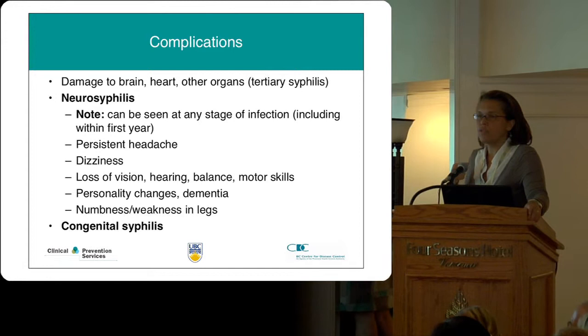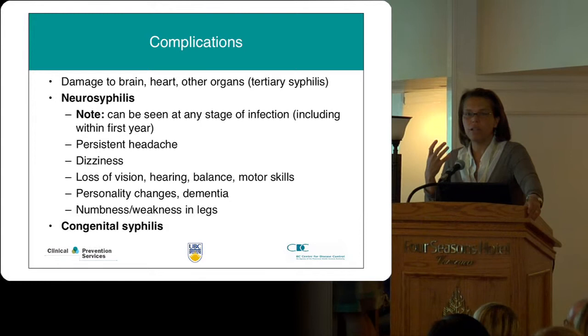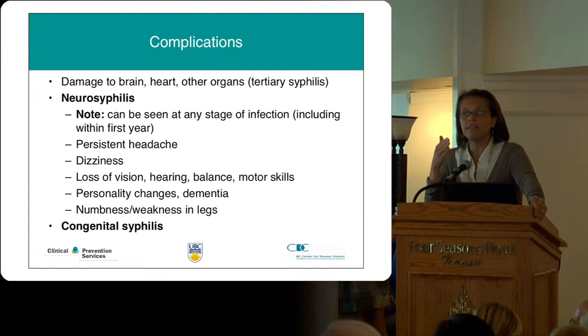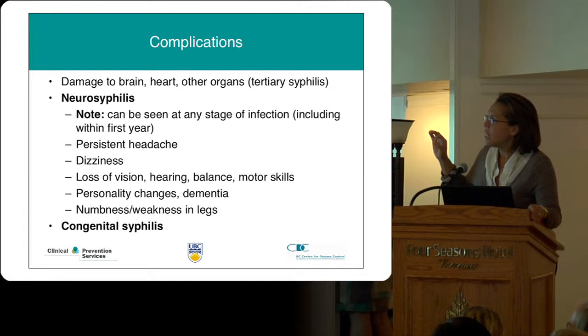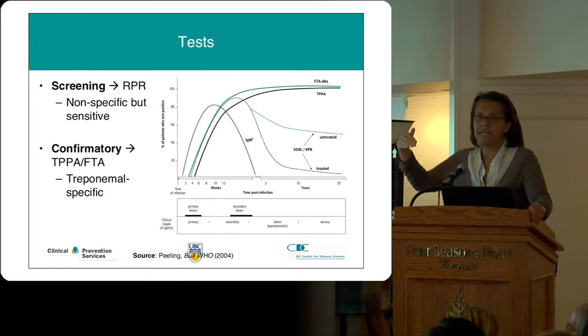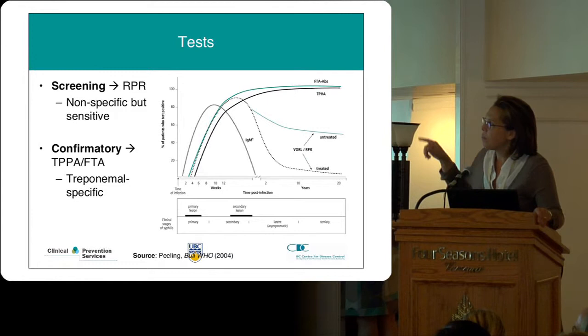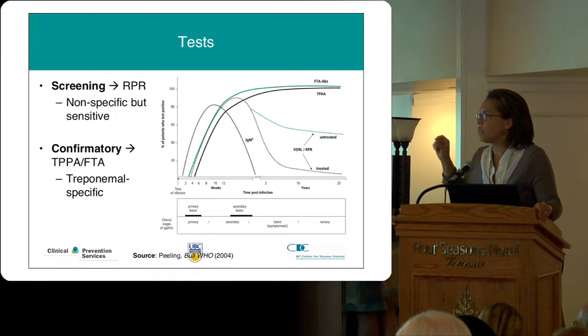Of course, think about congenital syphilis as well. Screening in pregnancy is well established, but with a client who you think may have risk through their partners, repeat testing in the third trimester is also a very good idea. Regarding diagnostic tests: for primary and secondary syphilis, the RPR may sometimes be negative, so keep that differential diagnosis in mind. The RPR screening is non-specific but very sensitive, whereas the confirmatory test is very specific for what we're trying to diagnose.